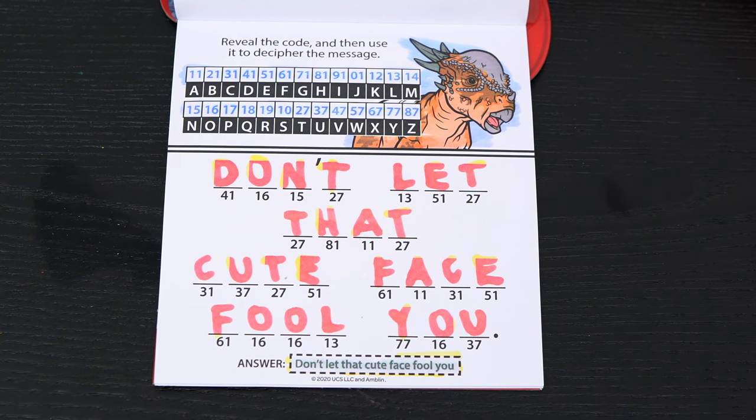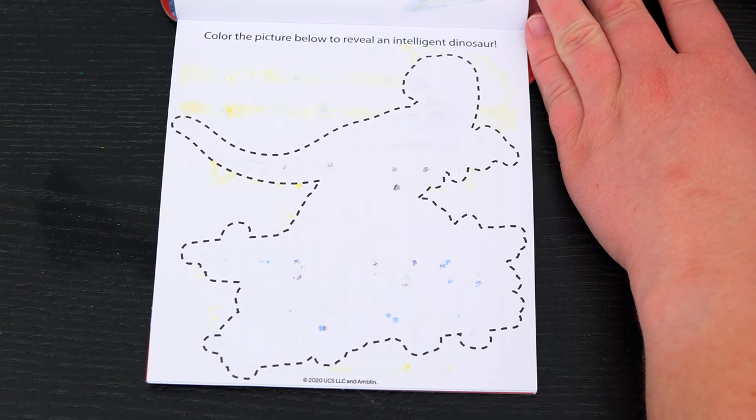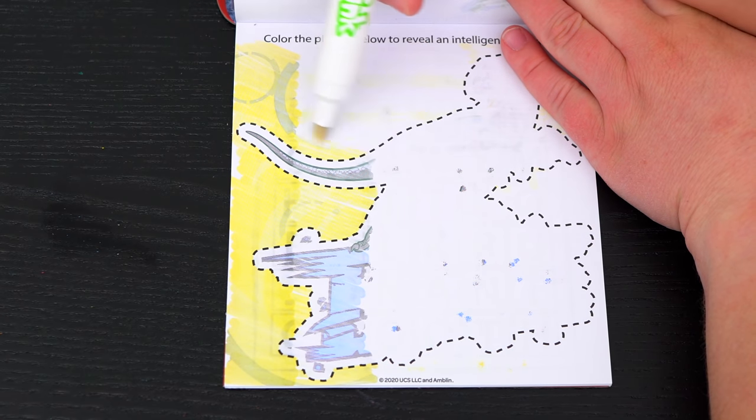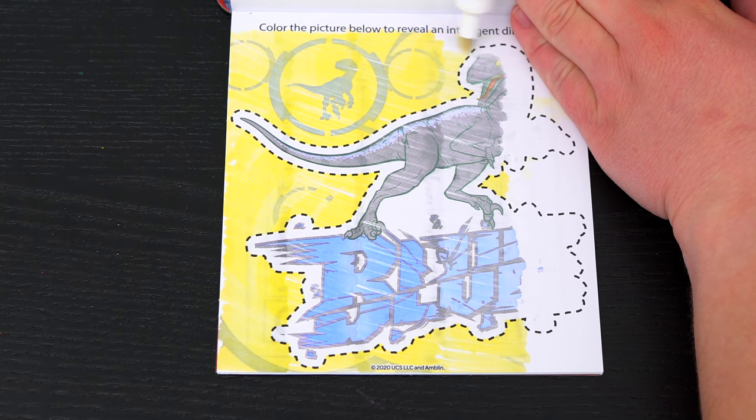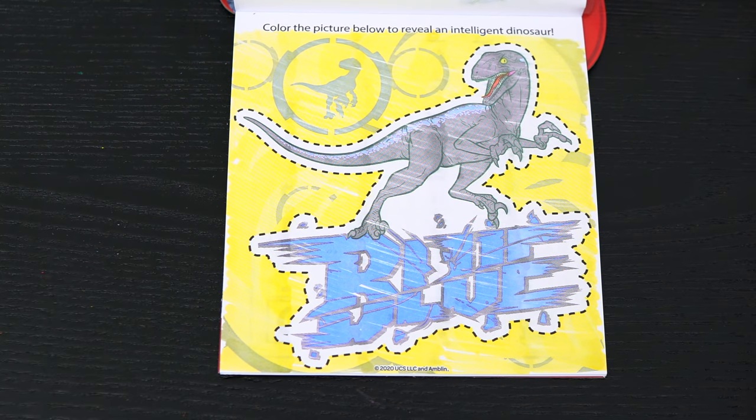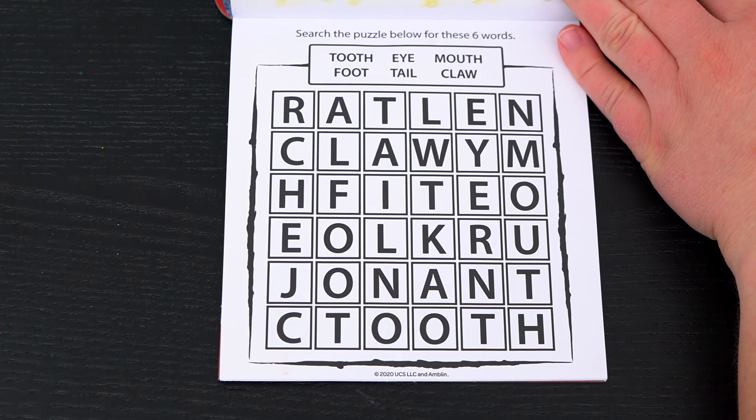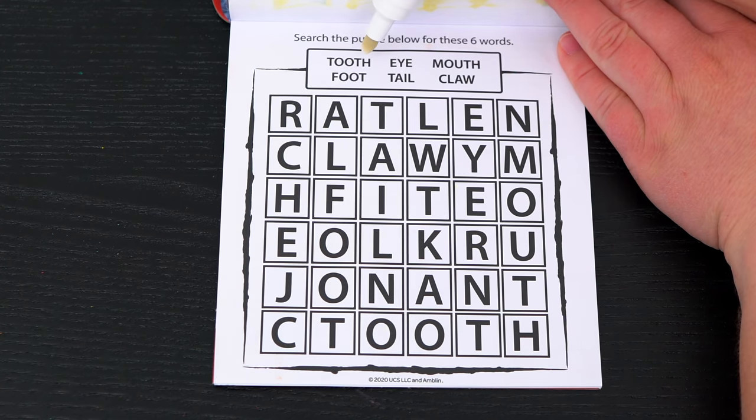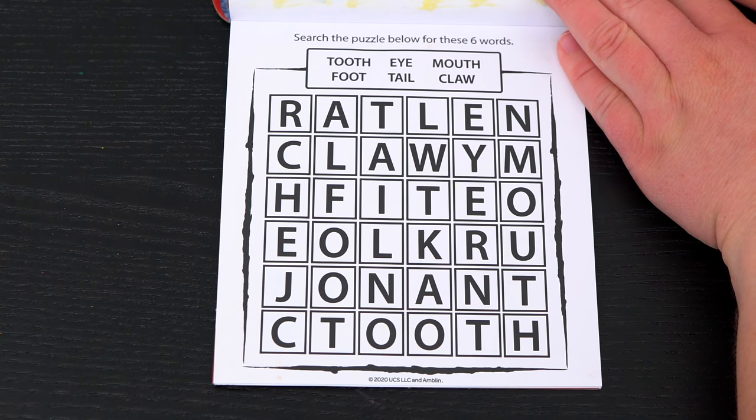Color the picture below to reveal an intelligent dinosaur! It's blue! What a smart velociraptor! Search the puzzle below for these six words! Okay, so we need to find the word tooth, foot, eye, tail, mouth, and claw! Oh look, I see claw right here!